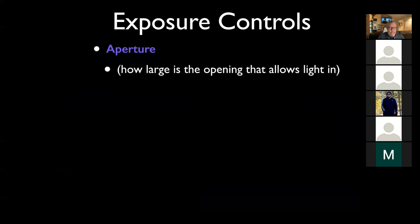The next control is aperture - how large is the opening that light slides in? In photography, there's aperture, which is the opening of the camera. There's a small set of blades inside your lens that opens and closes to different sizes and lets different amounts of light in. We'll go into this in much more detail next week, but basically aperture lets more or less light in.